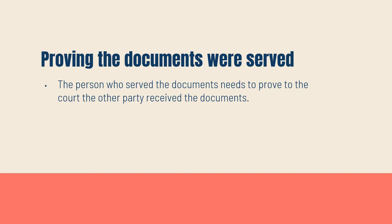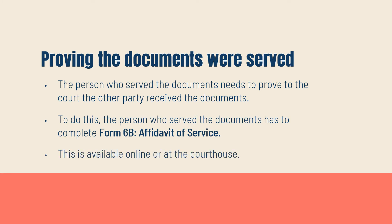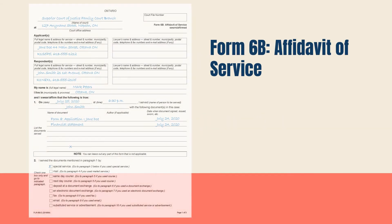This requires an Affidavit of Service, or Form 6B of the Family Law Rules of the Ontario Court Forms. This is available online or at the courthouse. This is the form that tells the court how, when, and where the documents were served. The person serving the documents, whether that is you or someone else, is called the server, and must sign this form under oath or solemn affirmation, promising the court that they are being truthful.